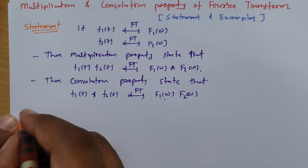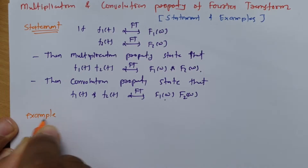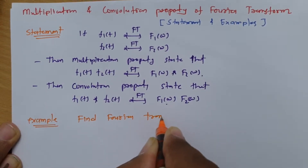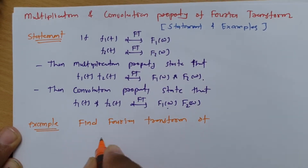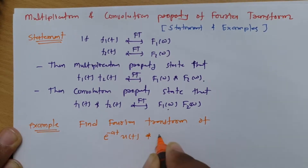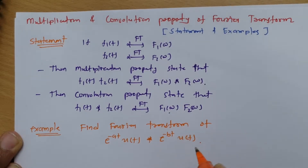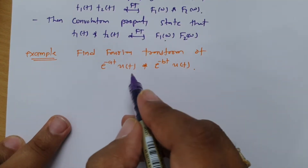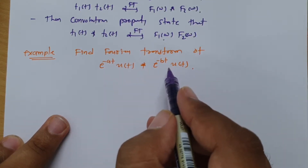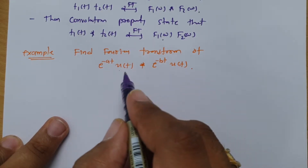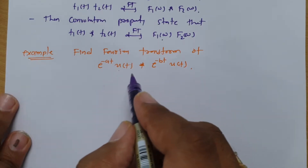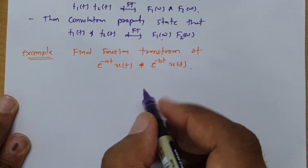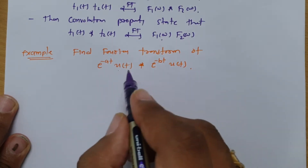The first example: find the Fourier transform of e^(−at)u(t) convolved with e^(−bt)u(t). If you observe this question, solving it by direct integration would be extremely difficult as the calculation becomes very complex. So here we can consider e^(−at)u(t) as one signal and e^(−bt)u(t) as a second signal, and by applying the convolution property we can find the Fourier transform in an easier way.